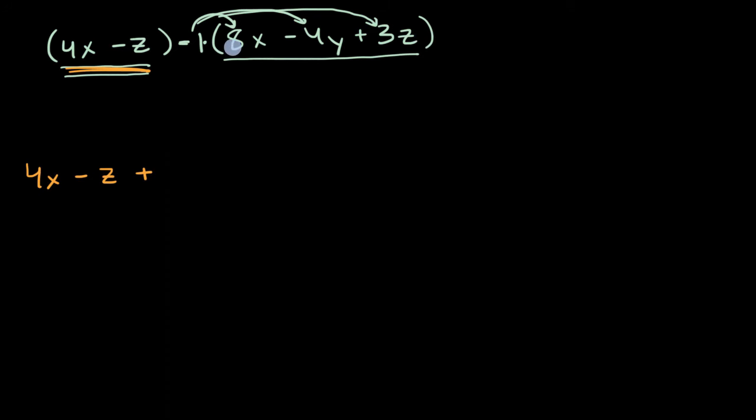So we have negative 1 times 8X. All right, negative 8X. And then we have negative 1 times negative 4Y. Well, that's going to be positive 4Y. And then we have negative 1 times positive 3Z. That would be negative 3Z.